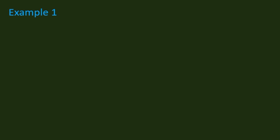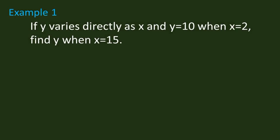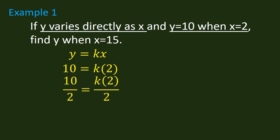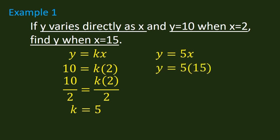Let's solve the following problems. Number one: if y varies directly as x and y is equal to 10 when x is equal to 2, find y when x is equal to 15. Since y varies directly as x, we have y is equal to kx. Substituting y equals 10 and x equals 2, we get 10 is equal to k times 2. Dividing both sides by 2, k is equal to 5. We substitute k into the equation, so we now have y is equal to 5x. To find y when x is equal to 15, we substitute: y is equal to 5 times 15, which is 75.